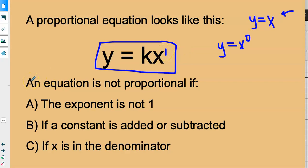So this brings us to what makes an equation not proportional. An equation is not proportional if the exponent is not 1. For example, let's say that the exponent was 3. If the exponent was 3, it's not proportional.